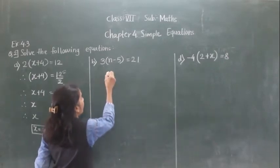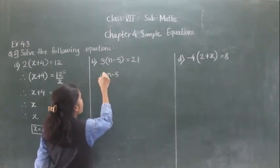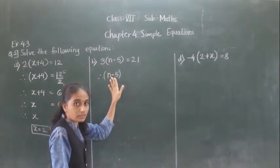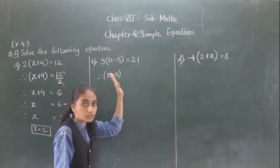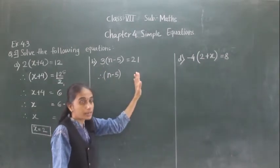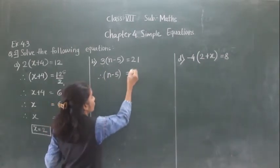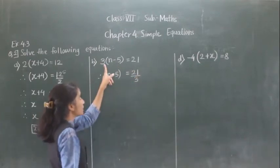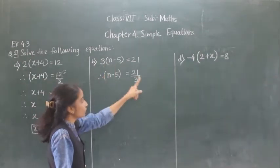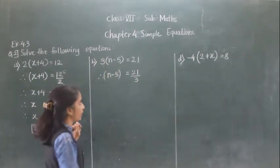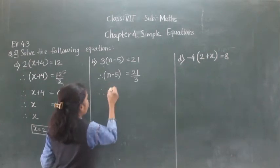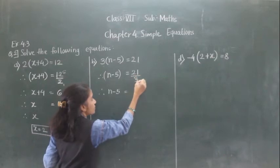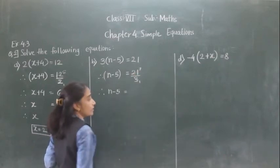What will remain here is N minus 5. We don't write 3 here because we are transferring 3 to the right hand side. So N minus 5 is equal to 21 divided by 3. 3 times 7 is 21, so N minus 5 is equal to 7.